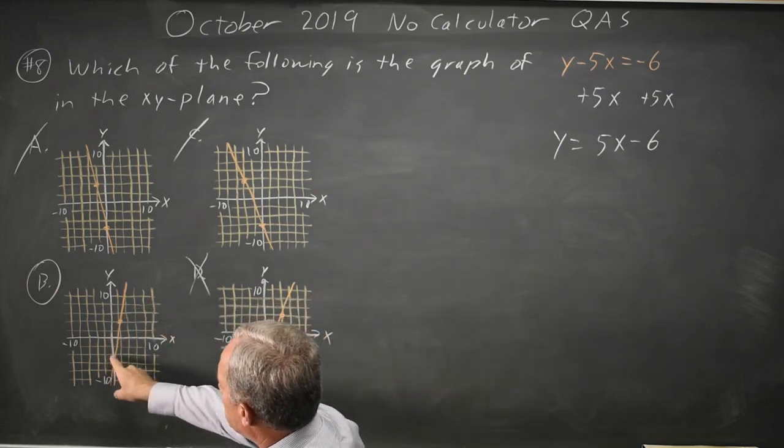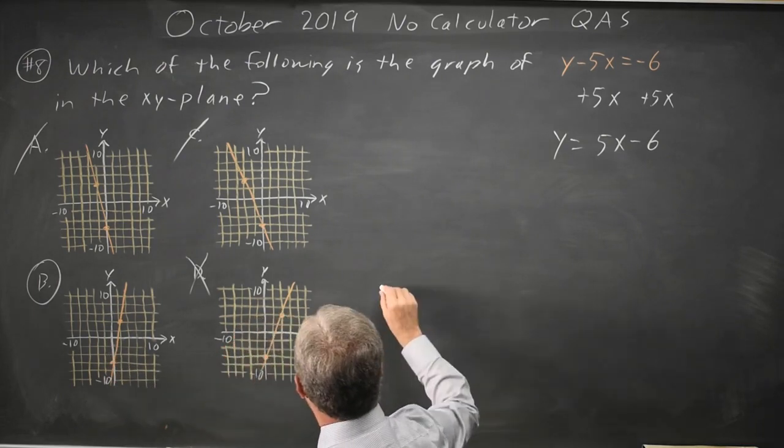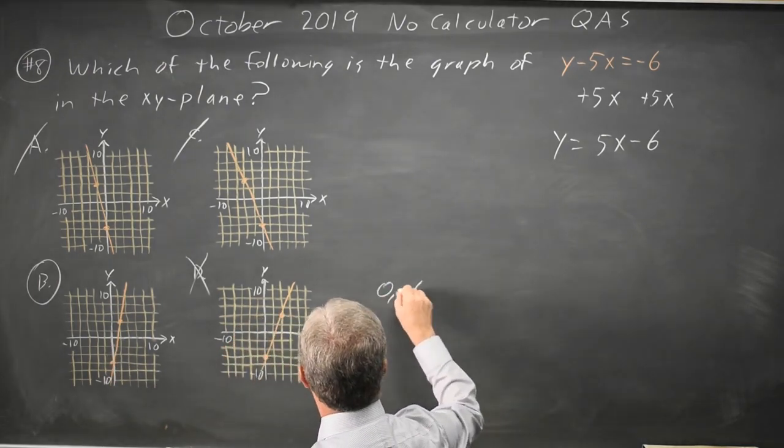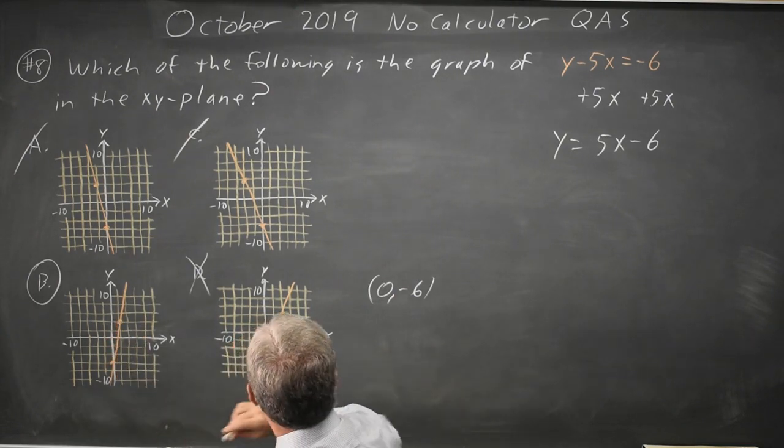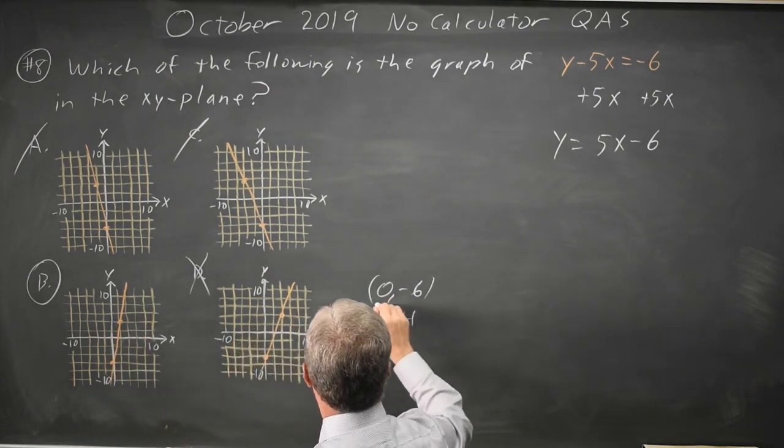And this is from negative 2, negative 4, negative 6. So I have 0, negative 6, and 2, 4. x equals 2, y equals 4.